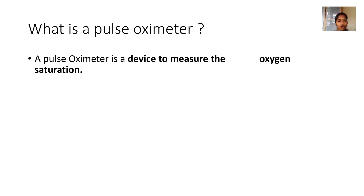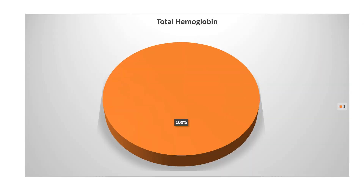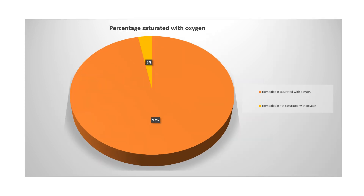The pulse oximeter is a device to measure the oxygen saturation — specifically, the arterial oxygen saturation. It measures the percentage of hemoglobin that is saturated with oxygen. For example, if the total hemoglobin present in our body is 100%, and 3% is not saturated with oxygen while the remaining 97% is saturated with oxygen, then the pulse oximeter measures that hemoglobin which is saturated with oxygen — in our example, the 97%.